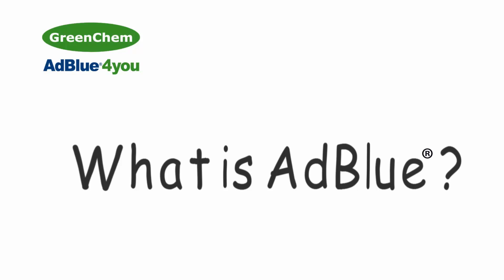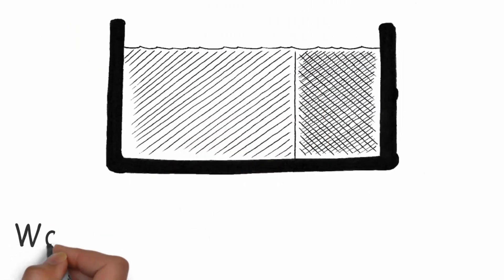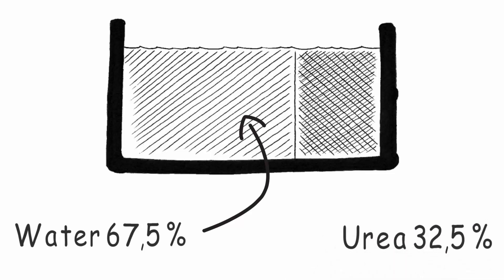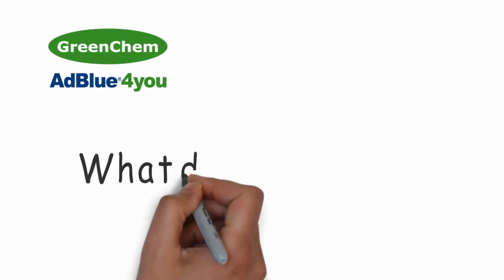What is AdBlue? AdBlue is a clear liquid solution which consists of demineralized water and the raw material automotive urea, 32.5%. What does AdBlue do?